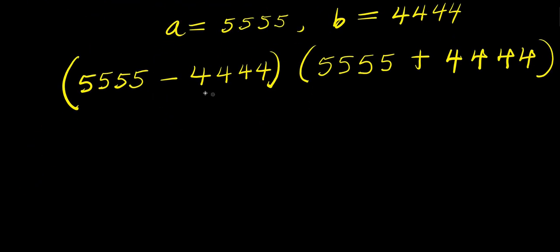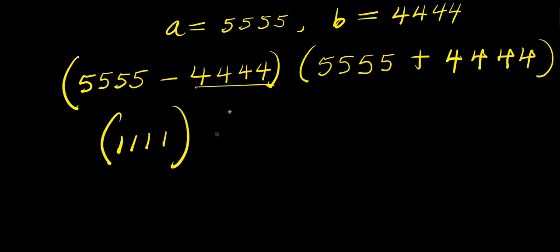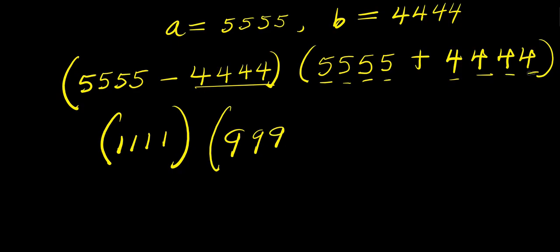Now we subtract digit by digit: 5 minus 4 is 1, 5 minus 4 again is 1, 5 minus 4 is 1, 5 minus 4 is 1 — giving us 1111. Then 5 plus 4 is 9, repeated for each digit — giving us 9999. So we have 1111 times 9999.